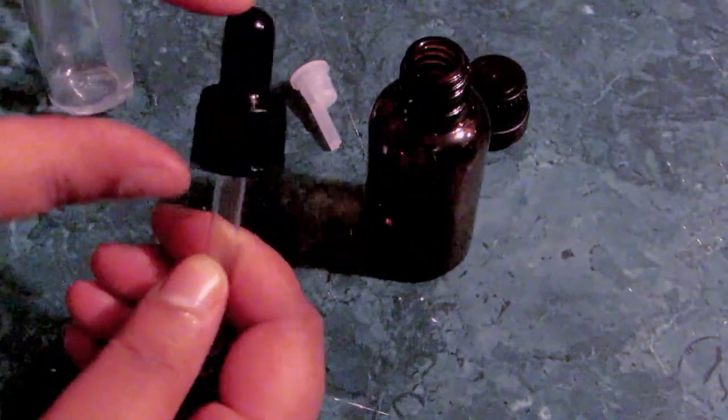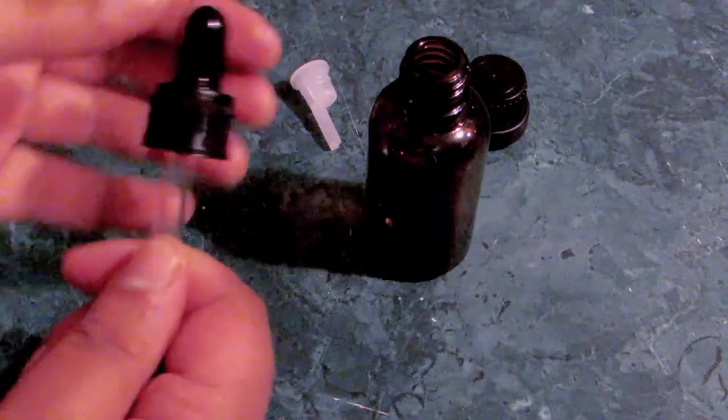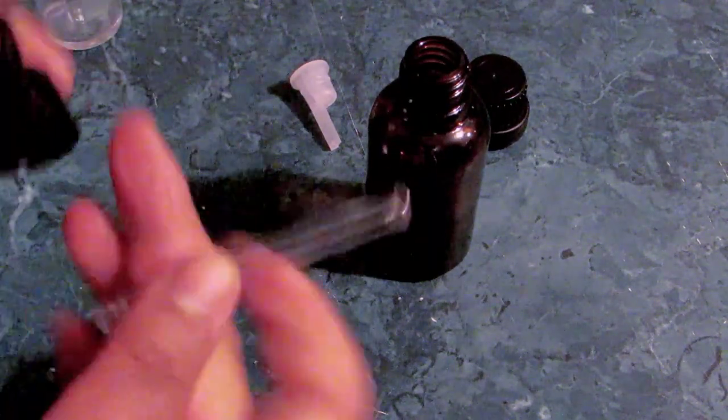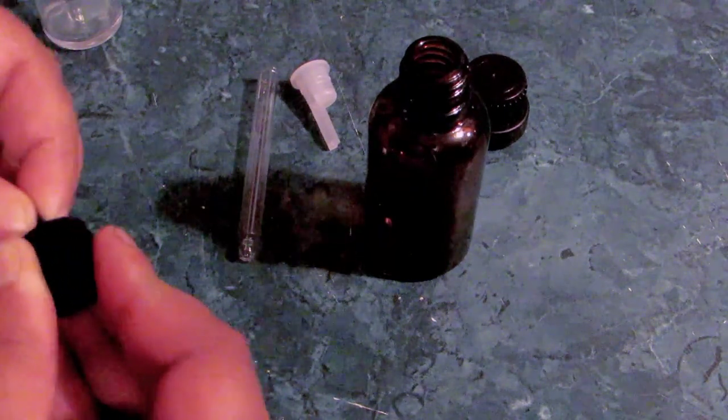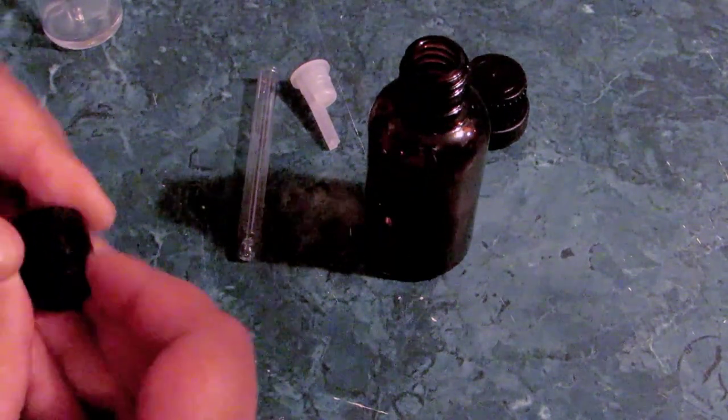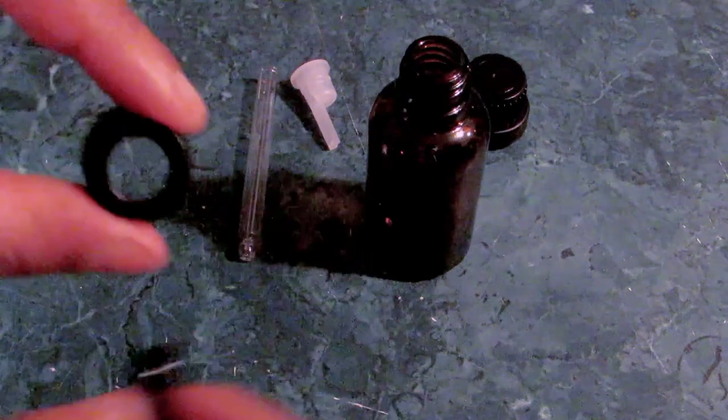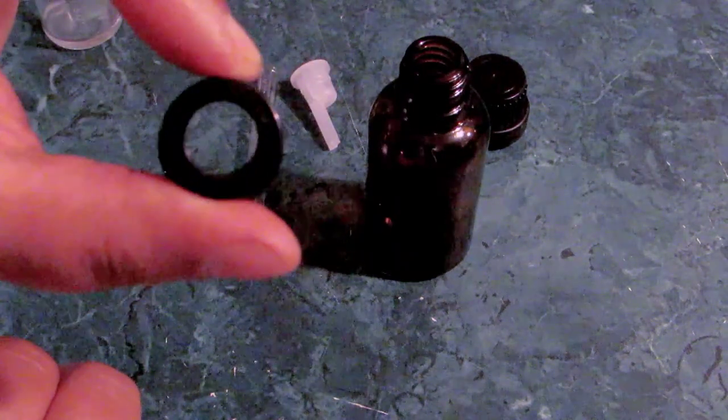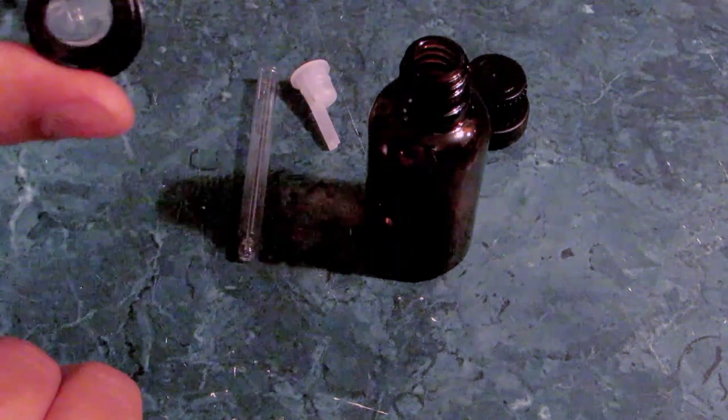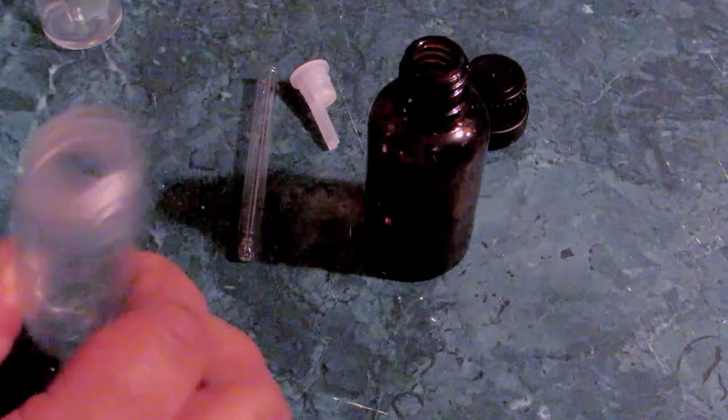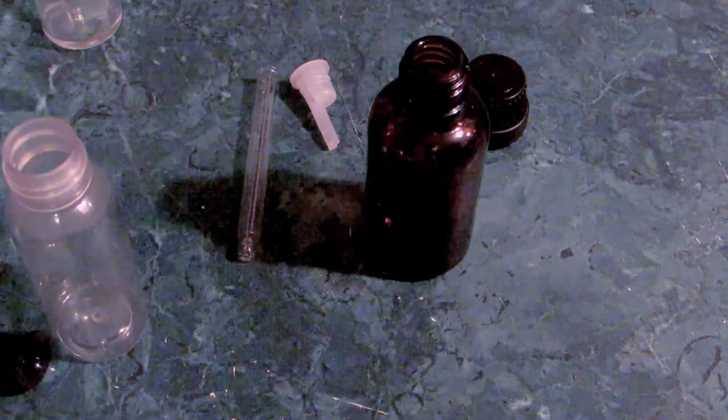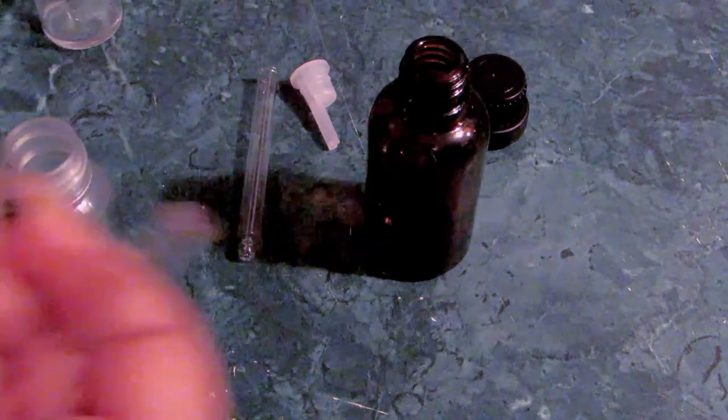This is where some of the adaptations are kind of cool. These caps and tops come into three pieces. I'm going to remove the glass dropper, and you can remove the rubber squeezy for some of your other stuff.